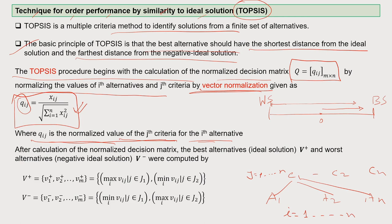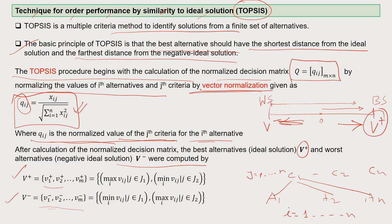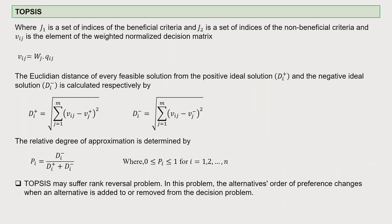After the normalized decision matrix is calculated, the best alternative — the ideal solution V+ — and the worst alternative — the negative ideal solution V- — are computed. V+ is a summation of V1 to Vn, and for V minus similarly you have V1-minus, V2-minus up to Vm. On the basis of the normalized decision matrix you calculate V+ and V-. If your V+ value is closer to the best solution, it will definitely be much further from the worst solution.